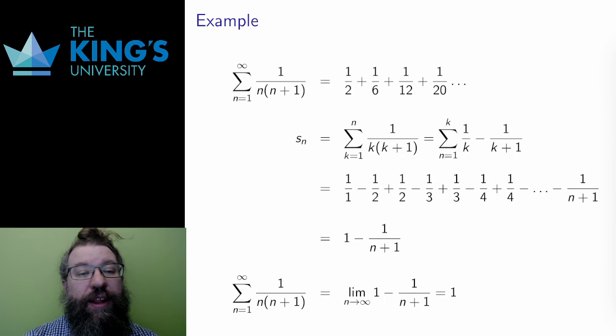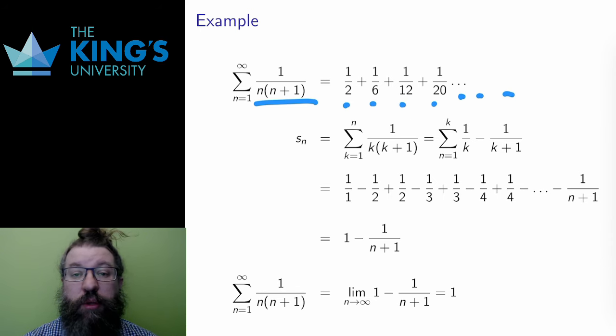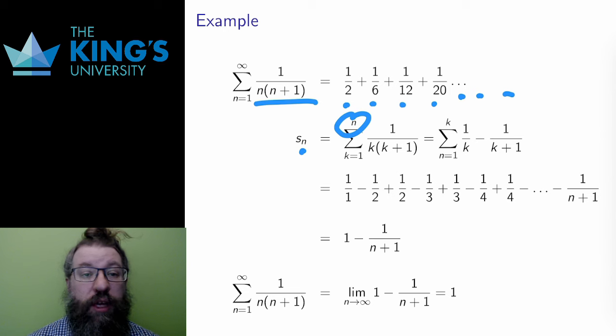Here is a series which will demonstrate another interesting and novel technique. This series has terms 1 over n times n plus 1, starting at n equals 1. The partial sums Sn are the sums up to some index n, as usual, using k as the index for the partial sums.